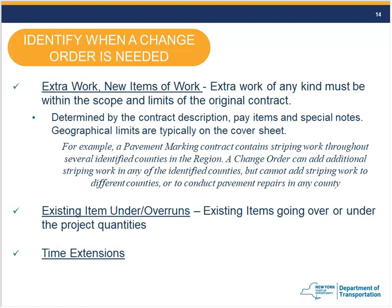For existing item overruns and underruns, sometimes you know in advance — for instance, a pavement job consistently running heavy on yield, or concrete repair areas much larger than estimated. Other times, overruns creep up unexpectedly. Time extensions are also relatively easy to identify: know your contract completion date and communicate early about whether a time extension is needed.